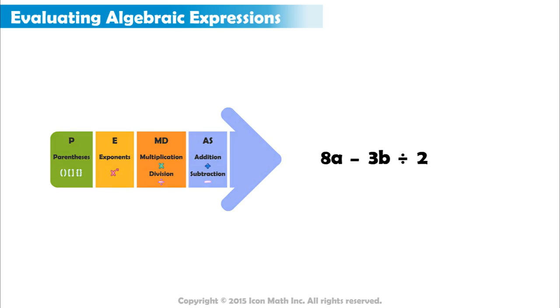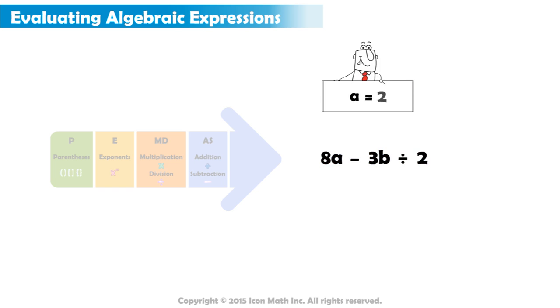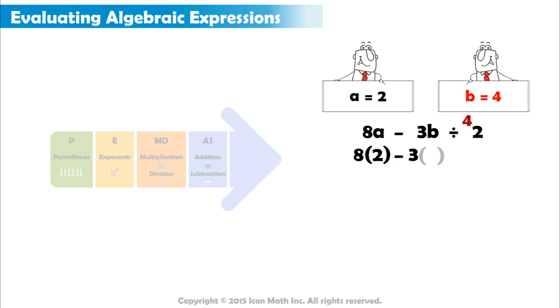Let's evaluate the expression 8A minus 3B divided by 2, when A equals 2 and B equals 4. We will begin by substituting 2 for A and 4 for B.